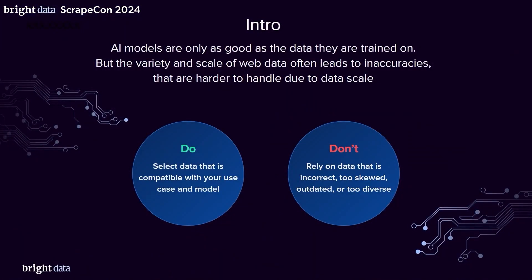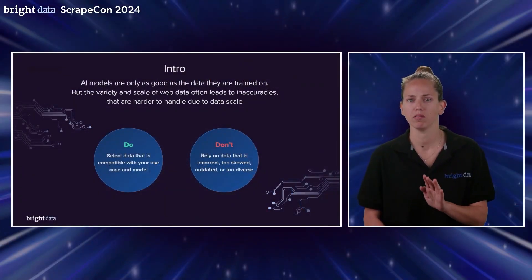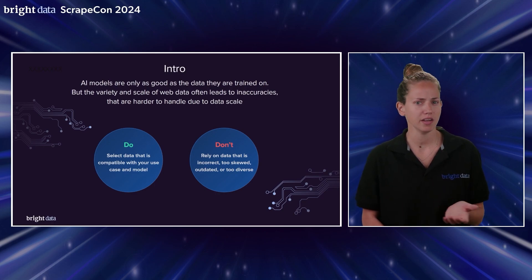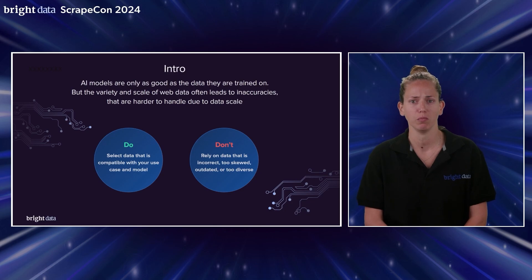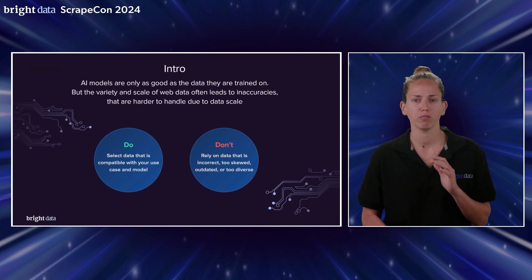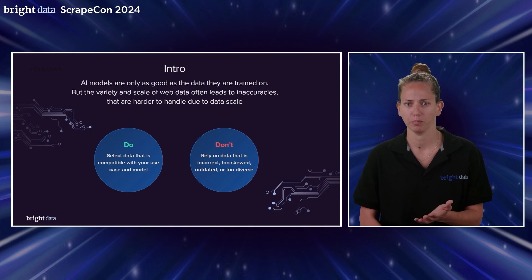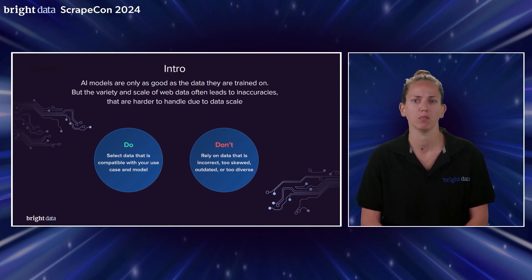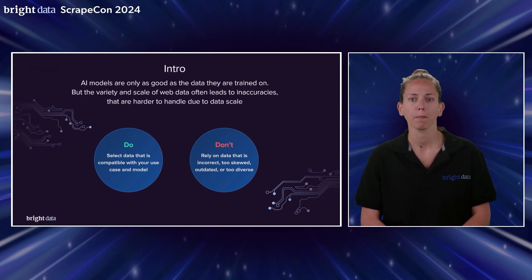When creating models, people often don't give enough thought to the data behind the model. They think they can simply use Wikipedia or sample 100 records and that will be enough. But AI models depend on the data they are built on and can only be as good as the data is. There are a lot of pre-made AI models available for use, but they require relevant, up-to-date data in order to work well. Data for training AI models can be collected from different sources, and the largest source is the open web, which is what we will look carefully into today.